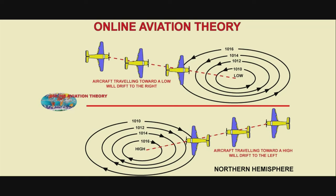If you put this into a practical aviation scenario, if an aircraft is flying toward a high-pressure system, the wind will be from the right and the aircraft will drift to the left.